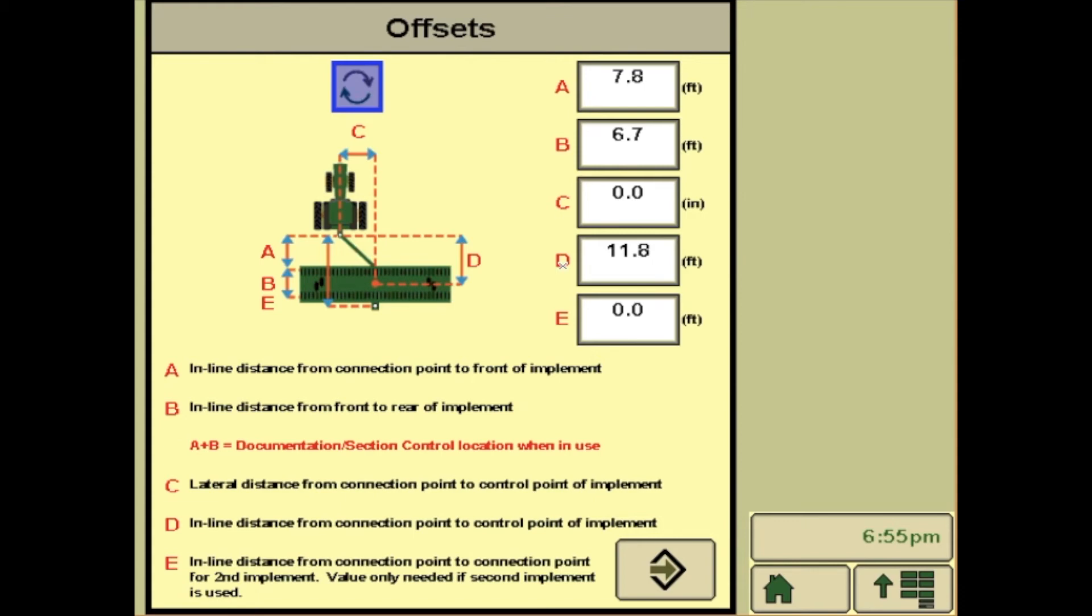D is from that same pivot point to your tires or lift assist wheels on a 1770, 1775, 1790, and 1795.